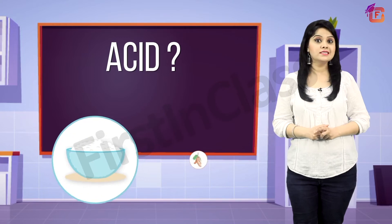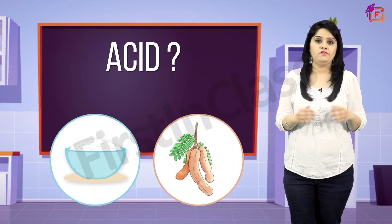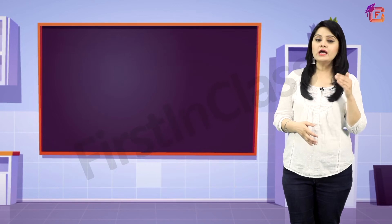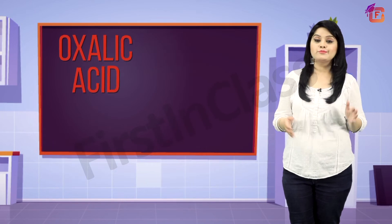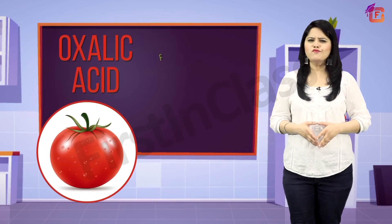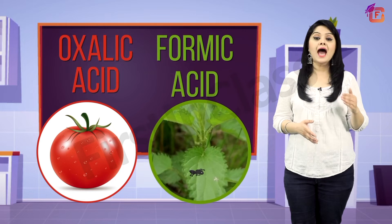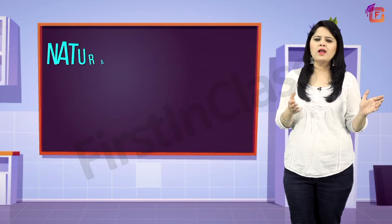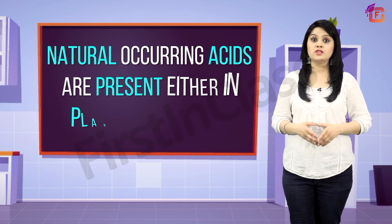Do you know which acid is found in curd and tamarind? Well, it is lactic acid in curd and tartaric acid in tamarind. Oxalic acid is present in tomato, whereas formic acid is present in ant sting and nettle sting. Did you observe the sources of acids that you learned here? These all are naturally occurring acids, present either in plants or animals.